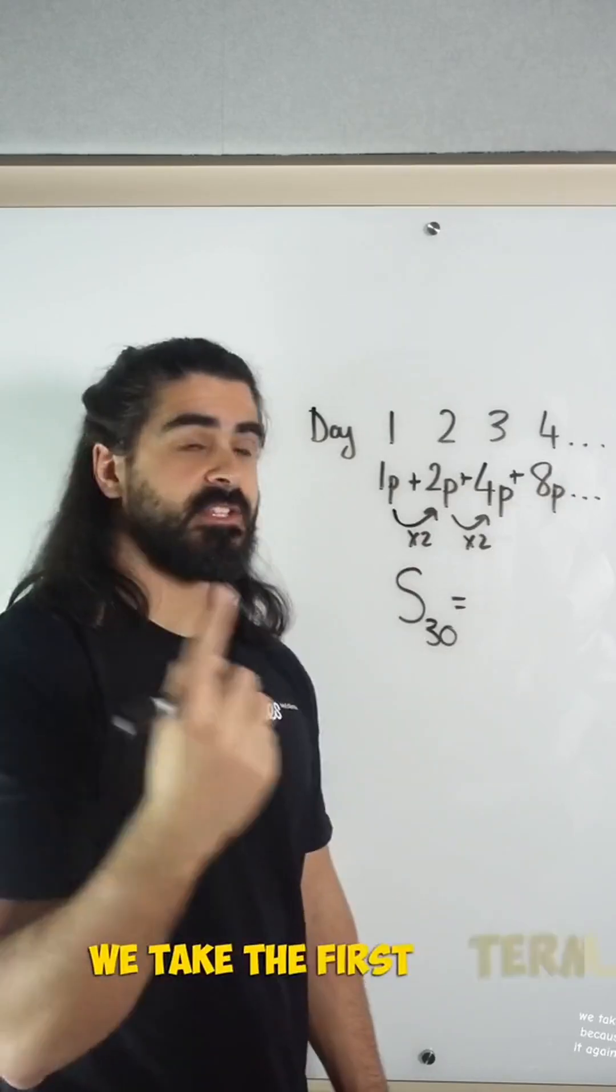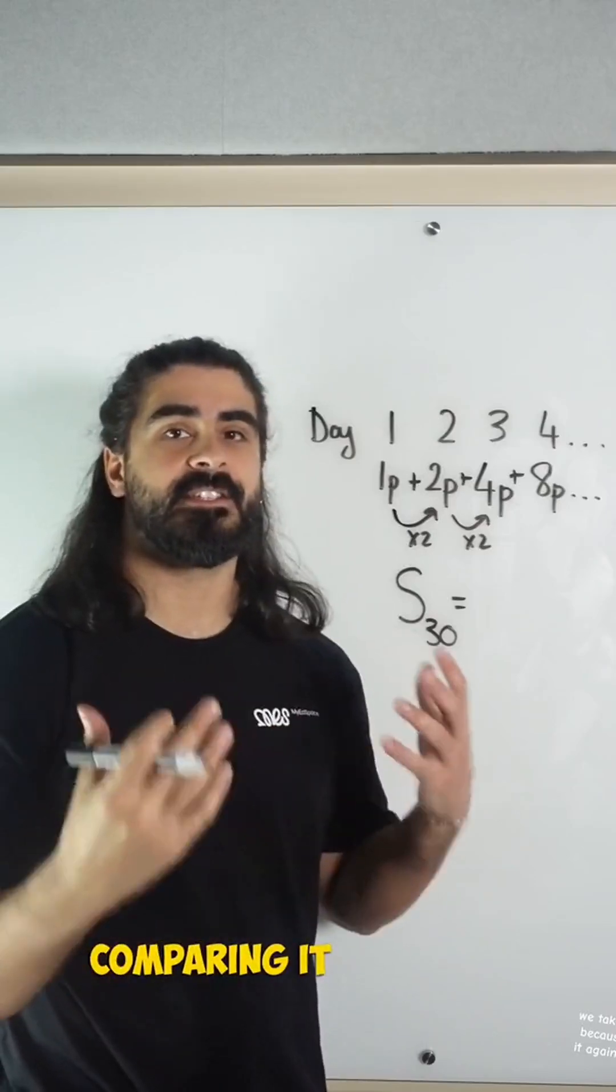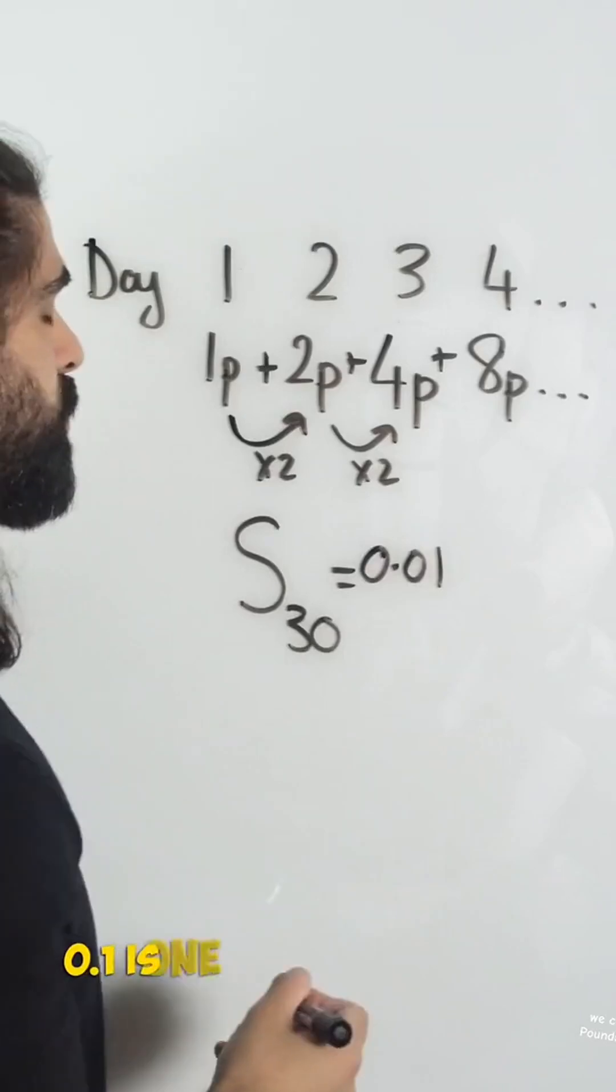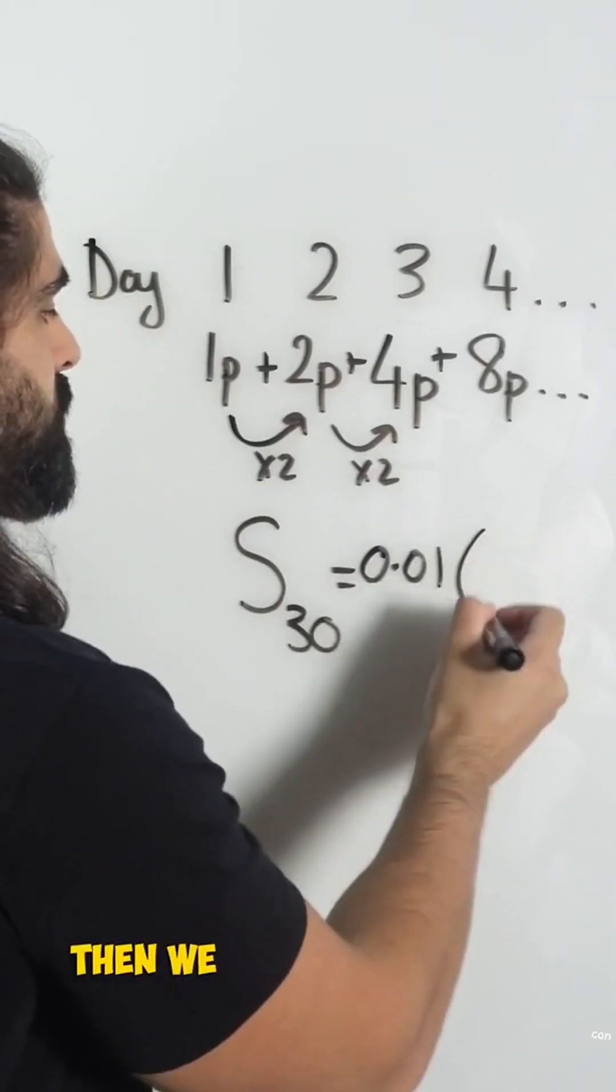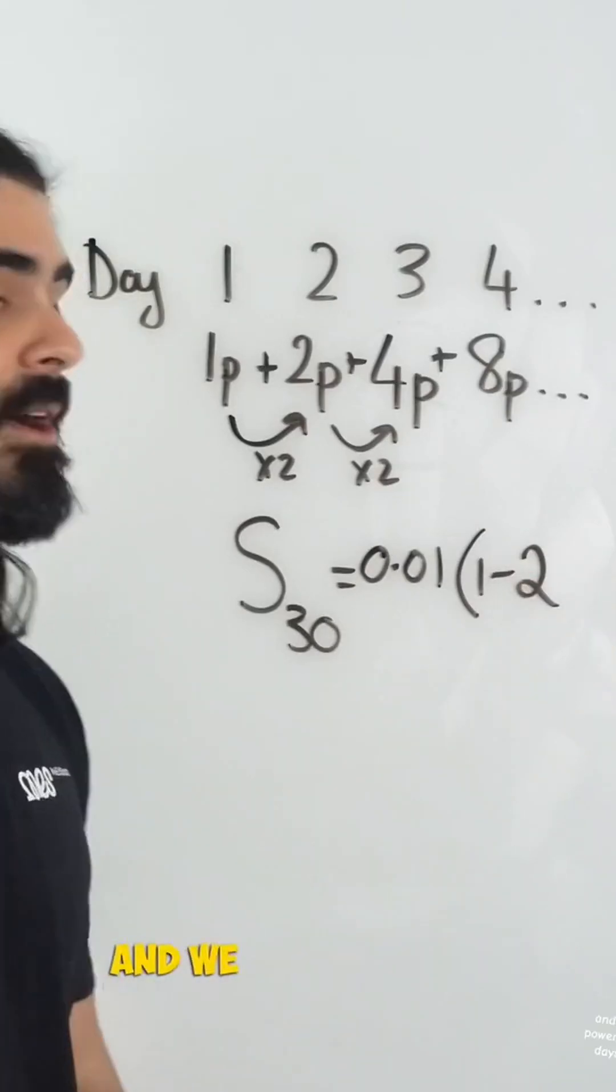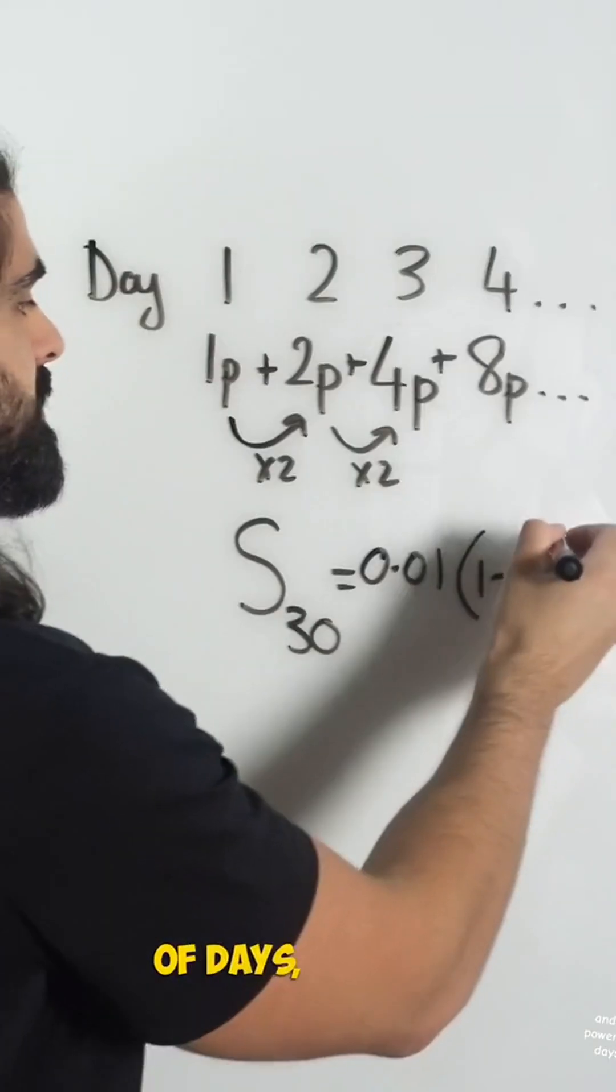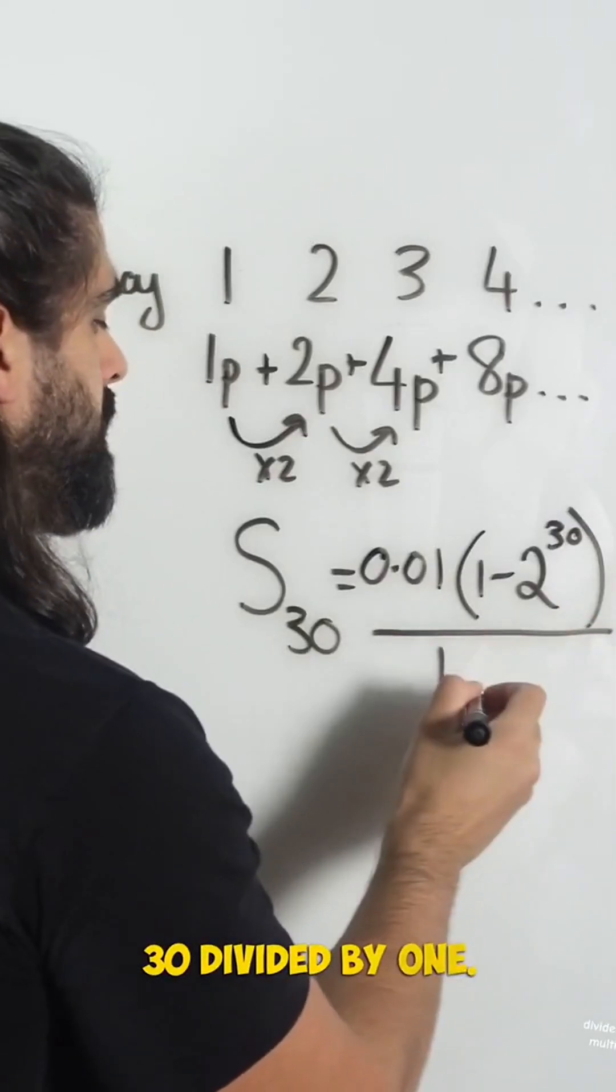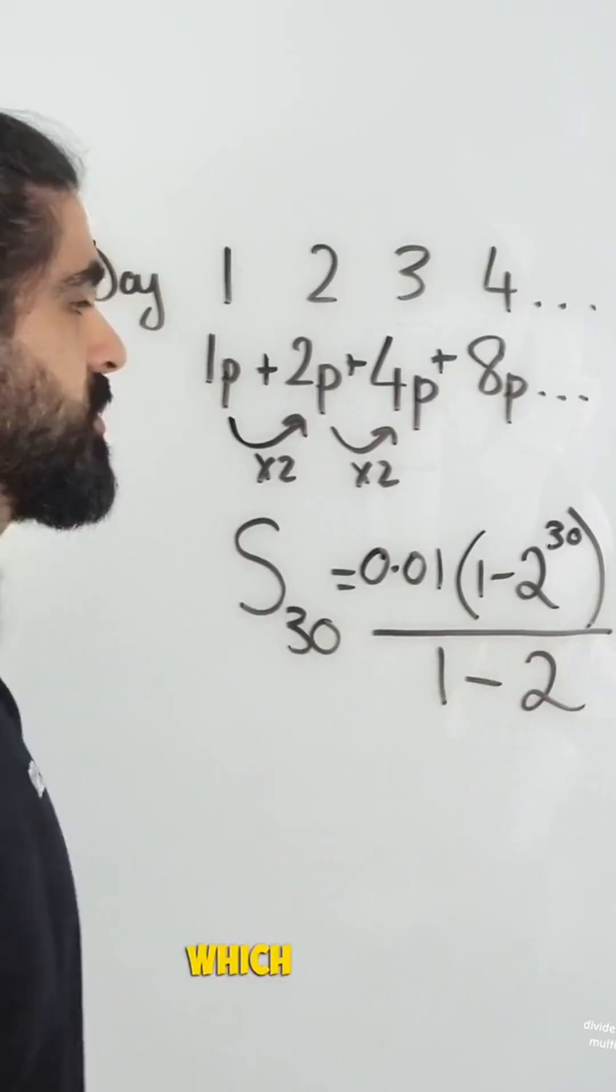We take the first term. Now because we're comparing it against a million pounds we need to convert all these to pounds. 0.01 is 1p in pounds and we do 1 minus the multiplier which is 2 and we take it to the power of the number of days which is 30 divided by 1 subtract the multiplier which is 2.